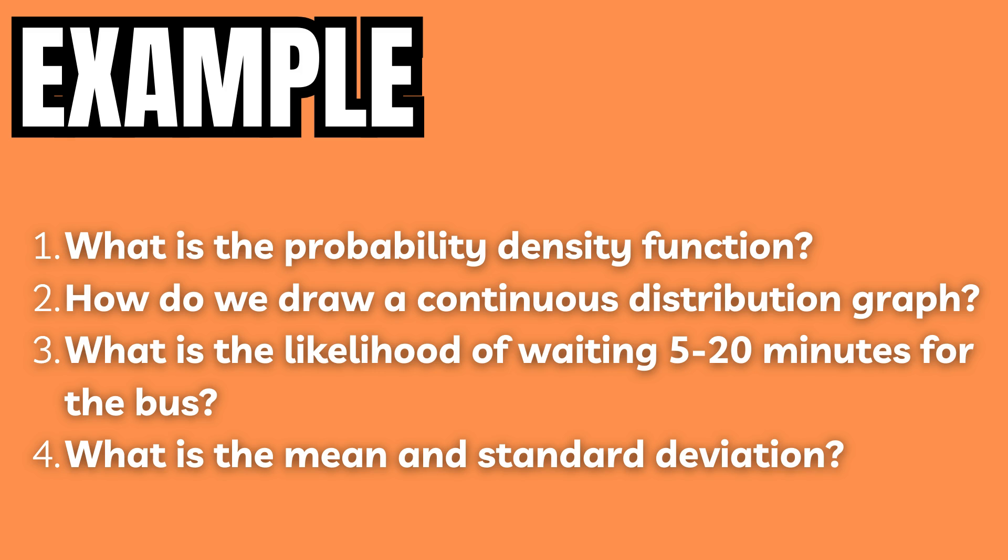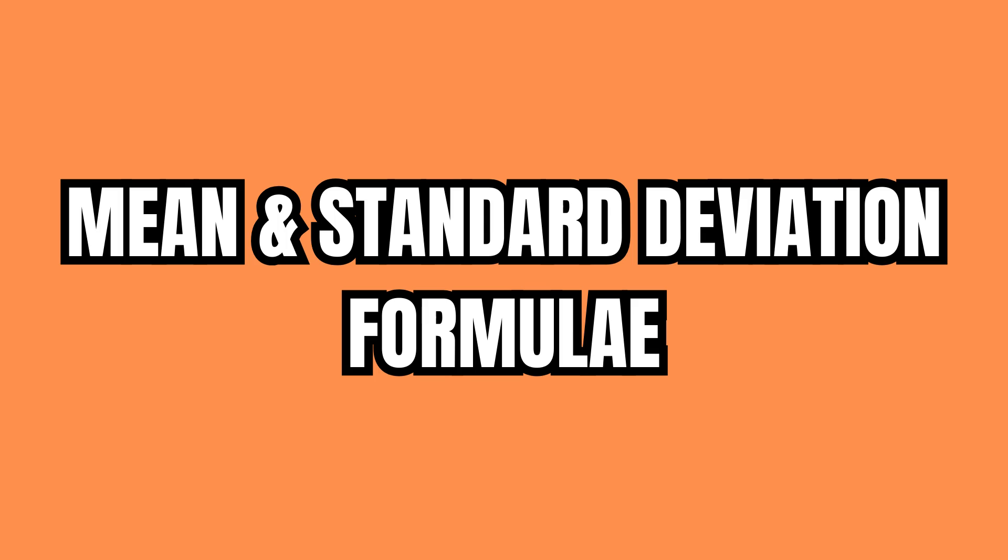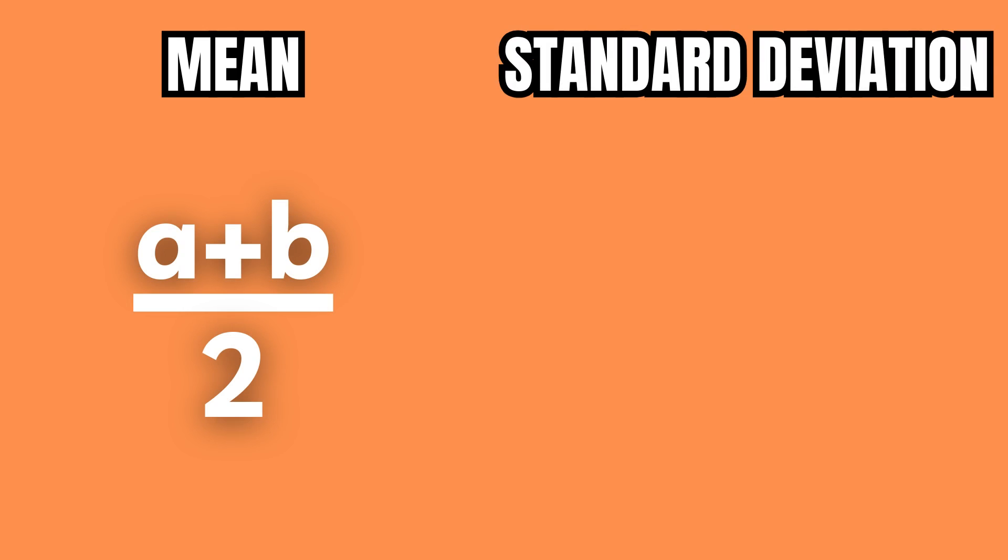For the final question, the formulas for the mean and standard deviation are: mean = (a+b)/2 and standard deviation = (b-a)/√12.